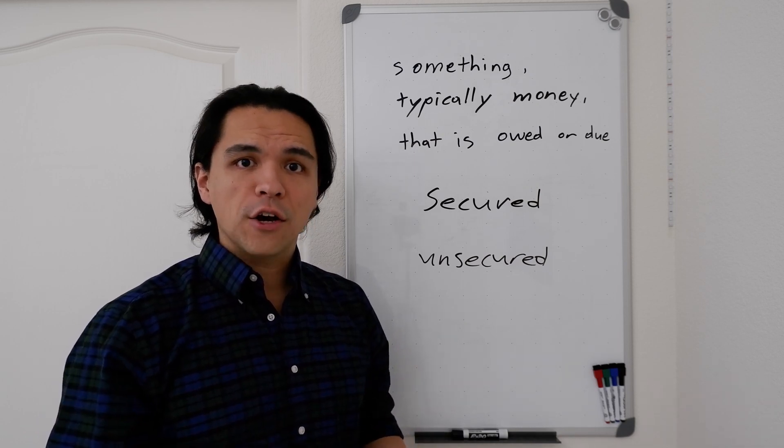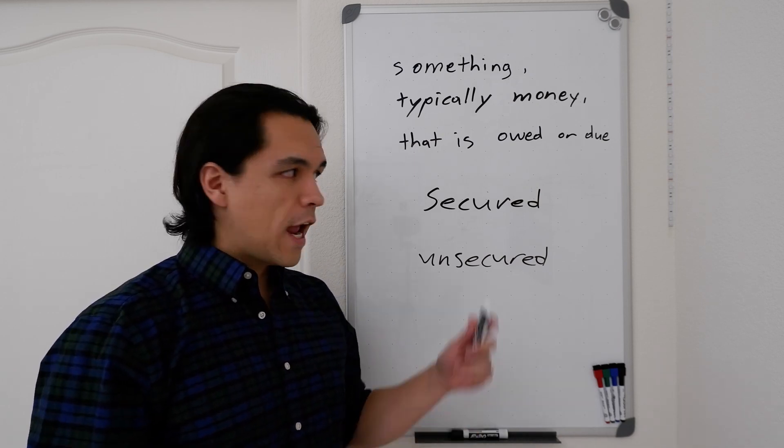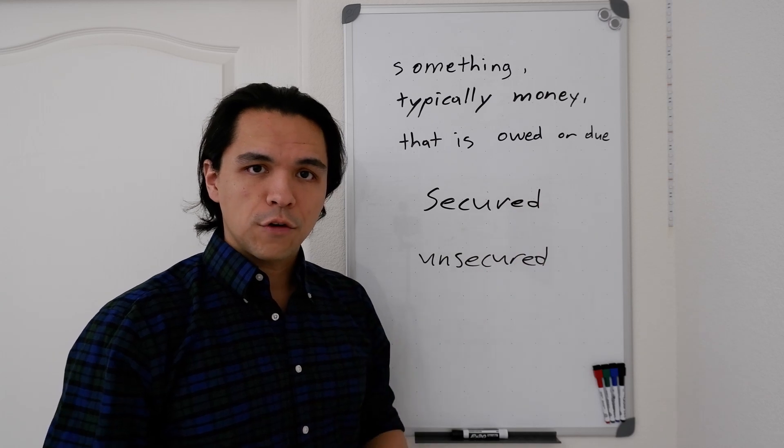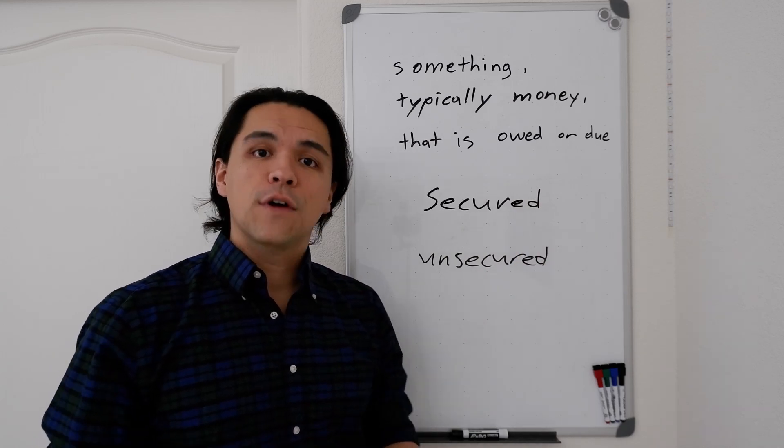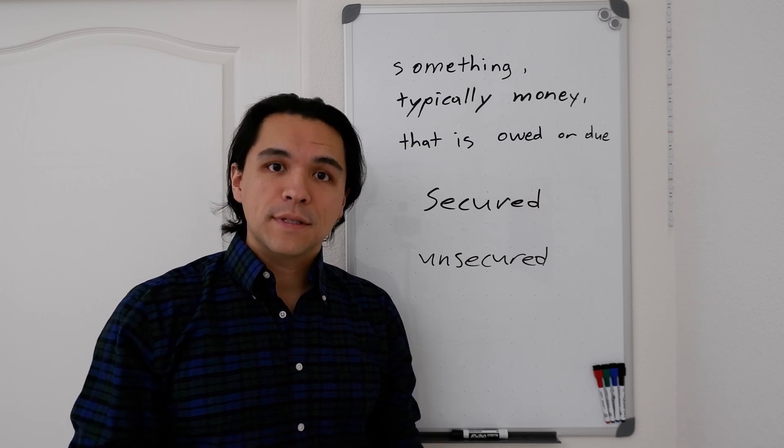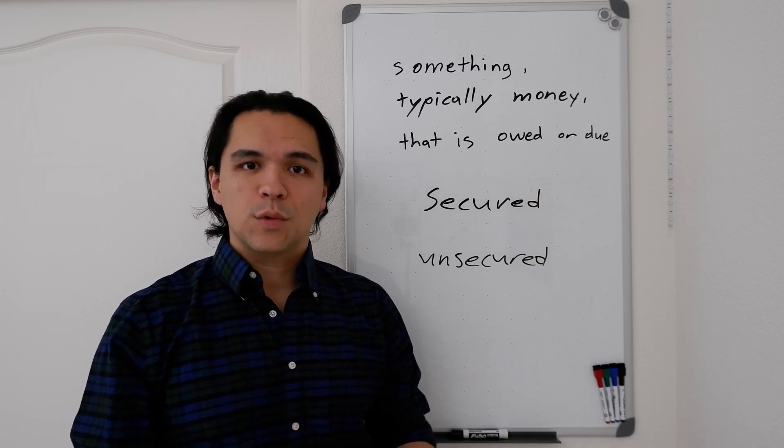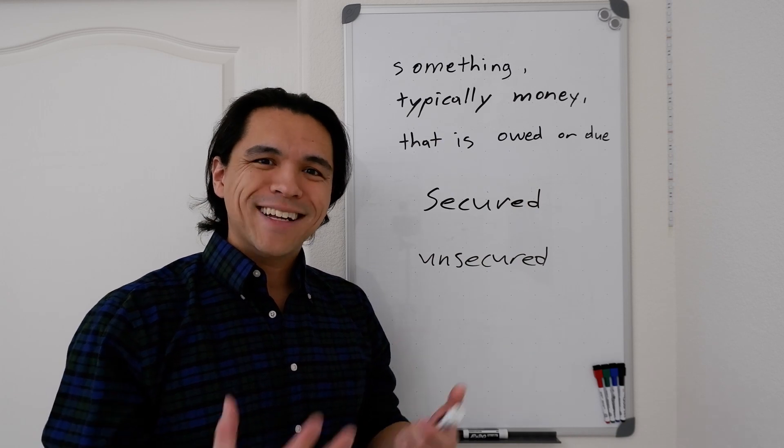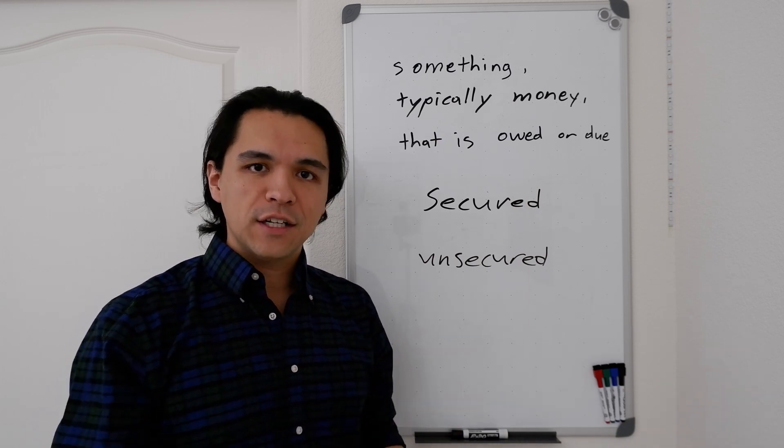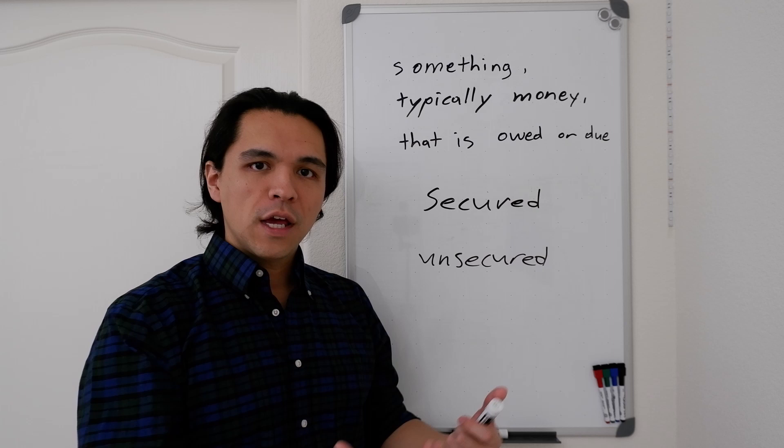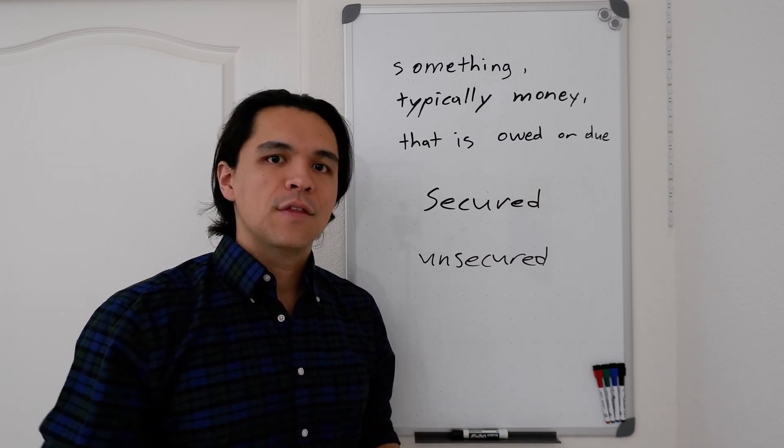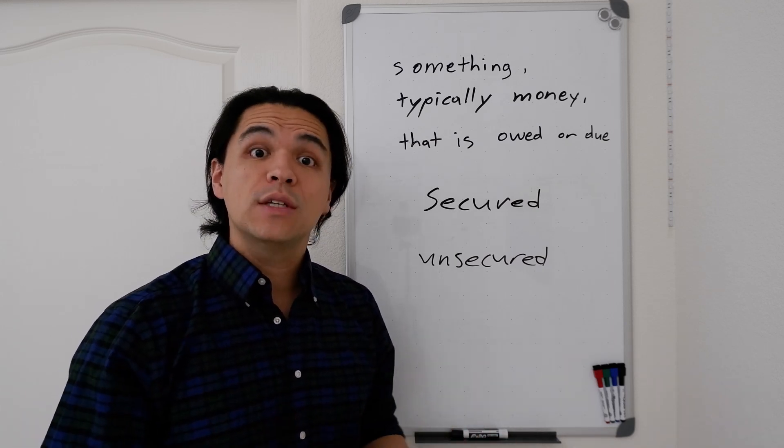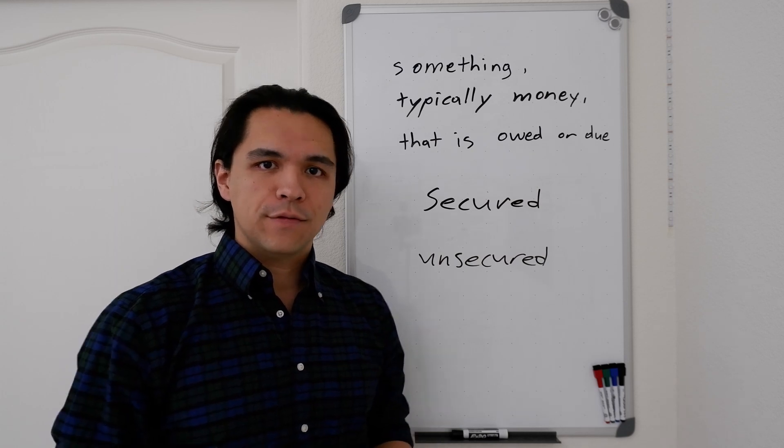Same thing with an auto. If you have a vehicle and that's securing a loan where you've borrowed money to purchase a vehicle, if you default on your payments, they will repossess the vehicle and try and sell it to recoup their money. So that's a secured loan. There is security attached to that loan so that the lender is more secure in giving you the money because there's an asset behind it that can be reclaimed and resold in the event of a default.